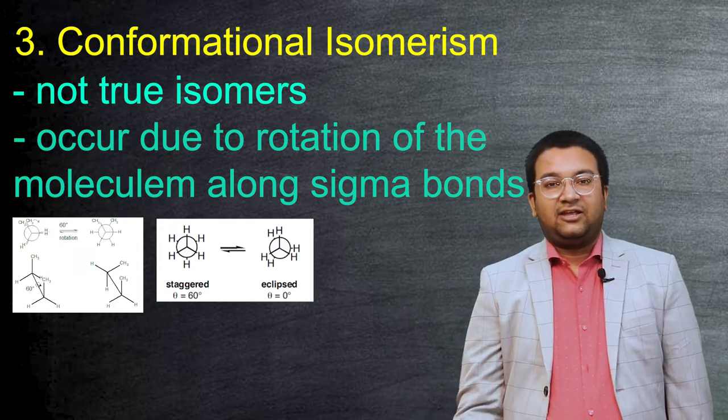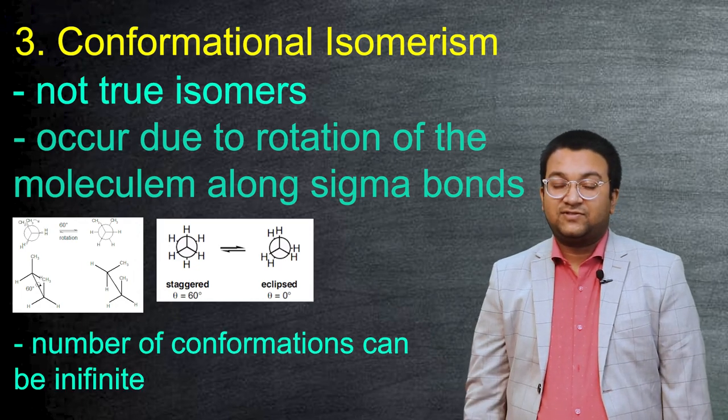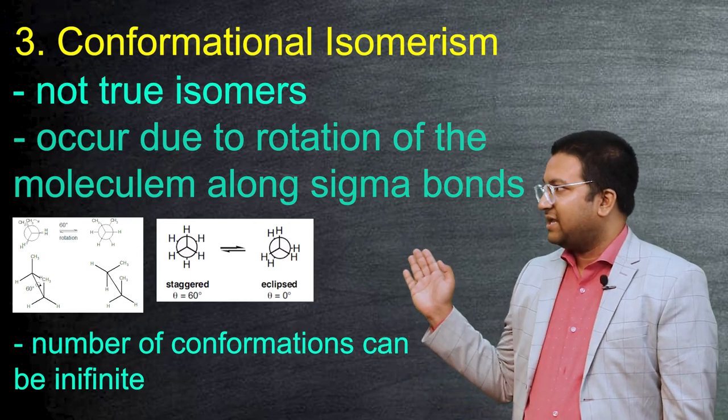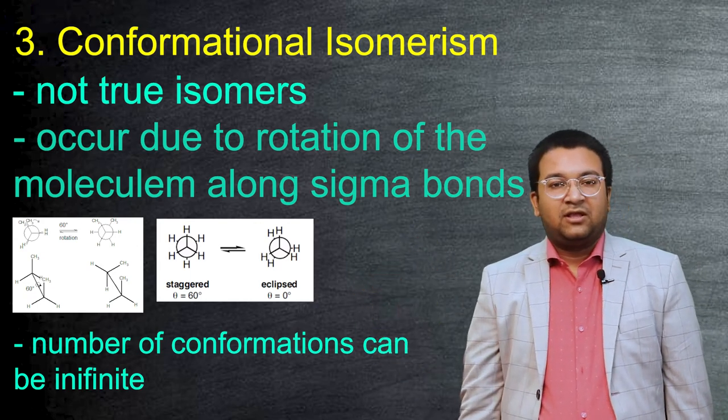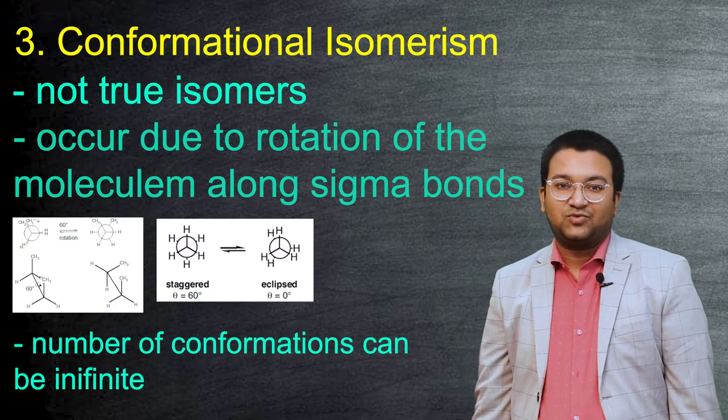Eclipsed and staggered are some of the examples by which any conformations can be shown. However, the number of conformations for any given compound can range to infinite number due to difference in angles. So that's all about stereoisomerism basics. I will see you in the next one.